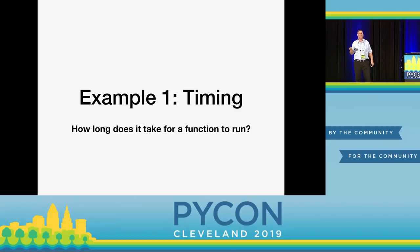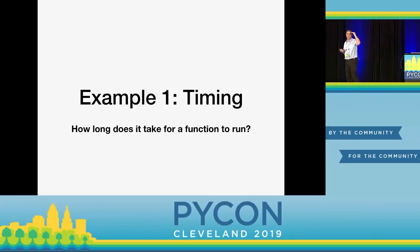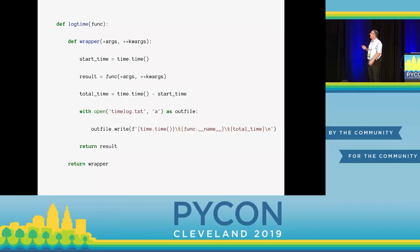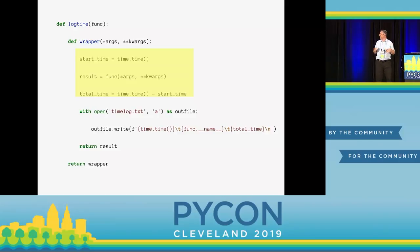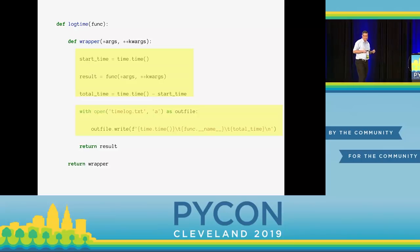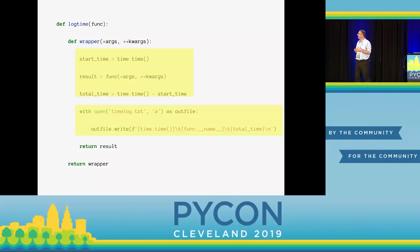A classic example is timing — how long does it take a function to run? I can use time.time to get the number of seconds since January 1st 1970, call it before and after the function, and subtract. Here's my decorator, which I'm calling log_time. It takes func as argument. The inside function records start_time = time.time, runs the function passing all arguments, stores the result, then finds the elapsed time. Then it writes to a file — time_log.txt — appending each time, writing the current time, the function name, and how long the function took to run.